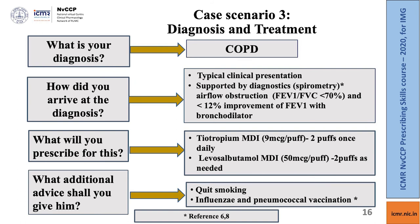For this COPD case, prescribe tiotropium — a long-acting anti-muscarinic agent — as MDI 9 micrograms per puff, 2 puffs once daily, and a need-based SABA: levosalbutamol MDI 50 micrograms per puff, 2 puffs as needed. Additionally advise the patient to quit smoking and consider vaccination against influenza and pneumococcus. Please refer to references 6 and 8 for COPD algorithms — we follow the GOLD guidelines and the ICMR Standard Treatment Workflow for management of COPD.